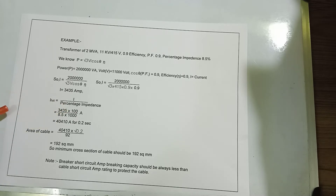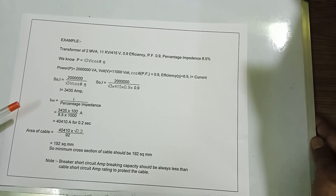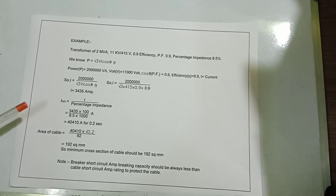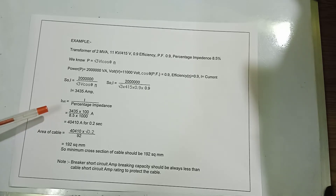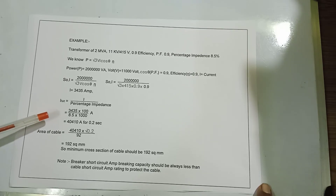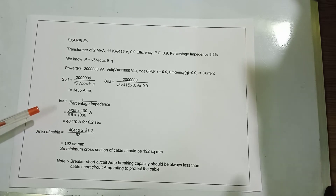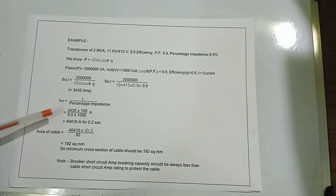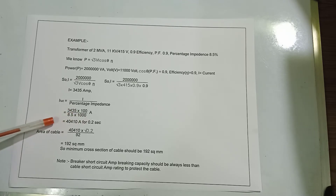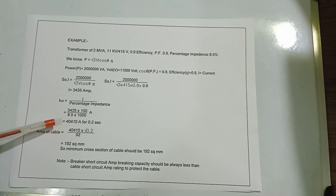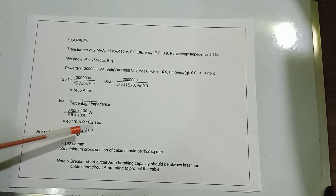The fault current I_fault = I divided by the percentage impedance = 3435 × 100 / 8.5 = approximately 40,410 amperes. This applies for a fault duration of 0.2 seconds.